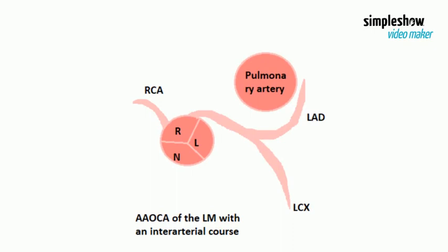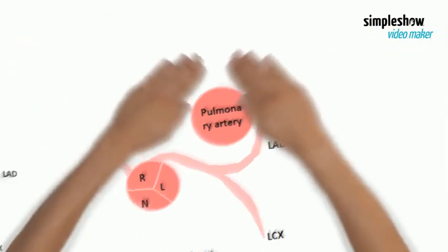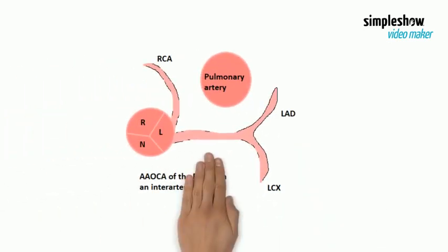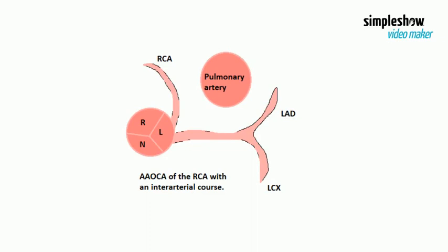Anomalous origin of the left main with an interarterial course — that is, between the two great arteries. Here is an example of the anomalously originated right coronary artery with an interarterial course.